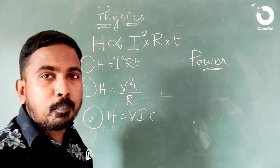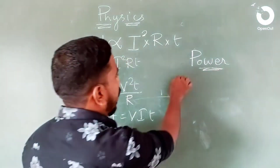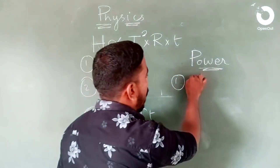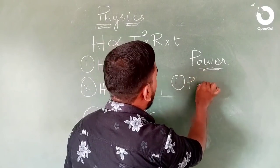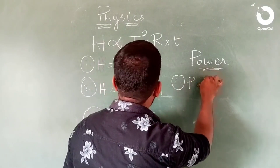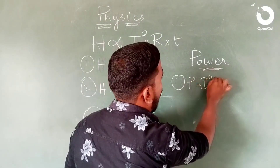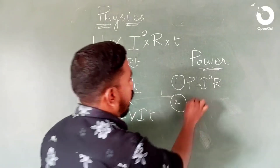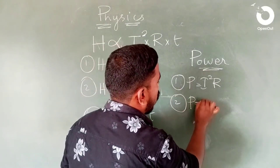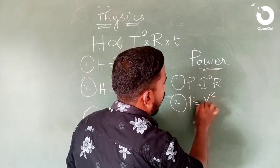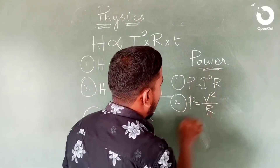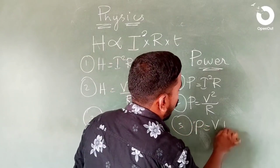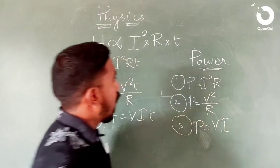Electric power. The equations are: P = I²R, P = V²/R, and P = VI. These are the three equations for electric power.